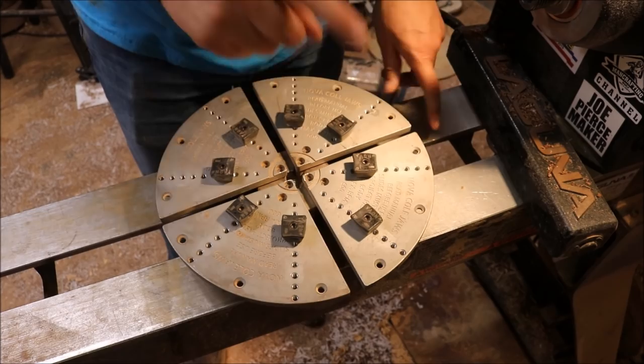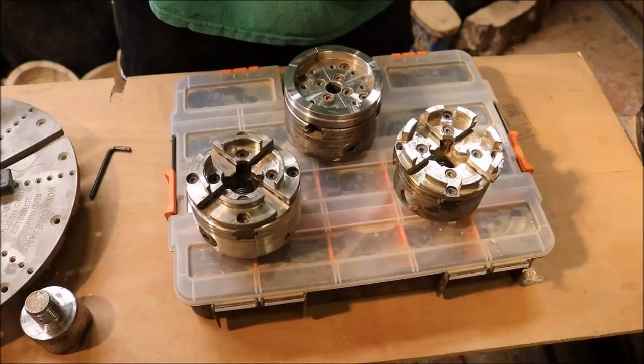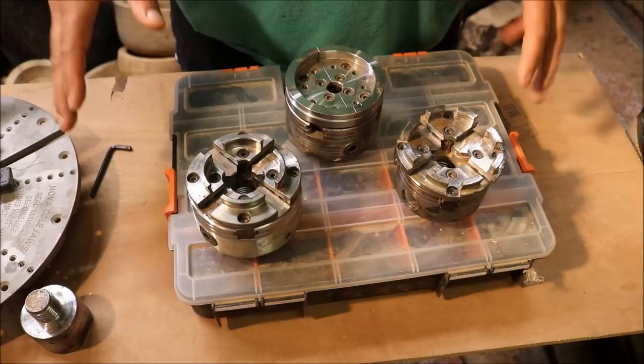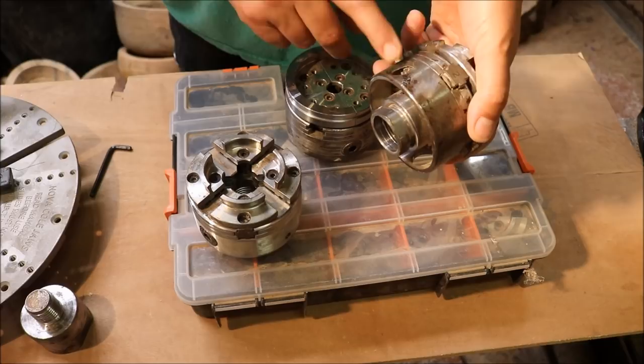The question still remains. What chuck and jaw set would I recommend for a beginning woodturner? Well, this is my opinion. And you'll get just as many opinions as people have assholes. My opinion is go out and find a G3 and it comes with the 50mm jaws and it also comes with the little handle.